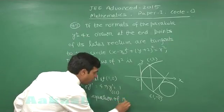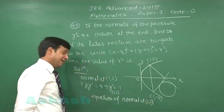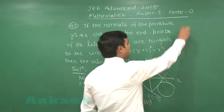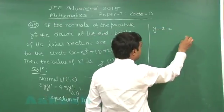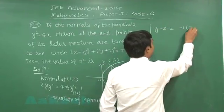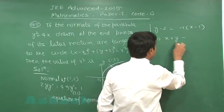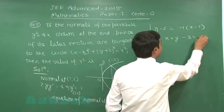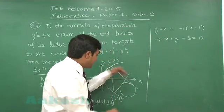Equation of normal at (1, 2). We can write the equation of normal at (1, 2) as y - 2 = -1(x - 1), or x + y - 3 = 0.